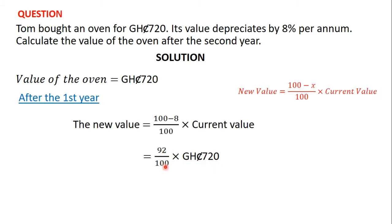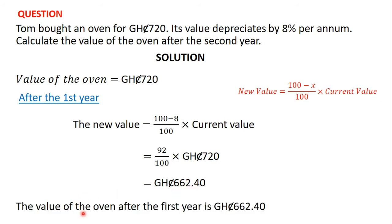92 divided by 100 times 720 gives us 662.40. So after the first year, the value of the oven is 662 Ghana cedis and 40 pesewas.